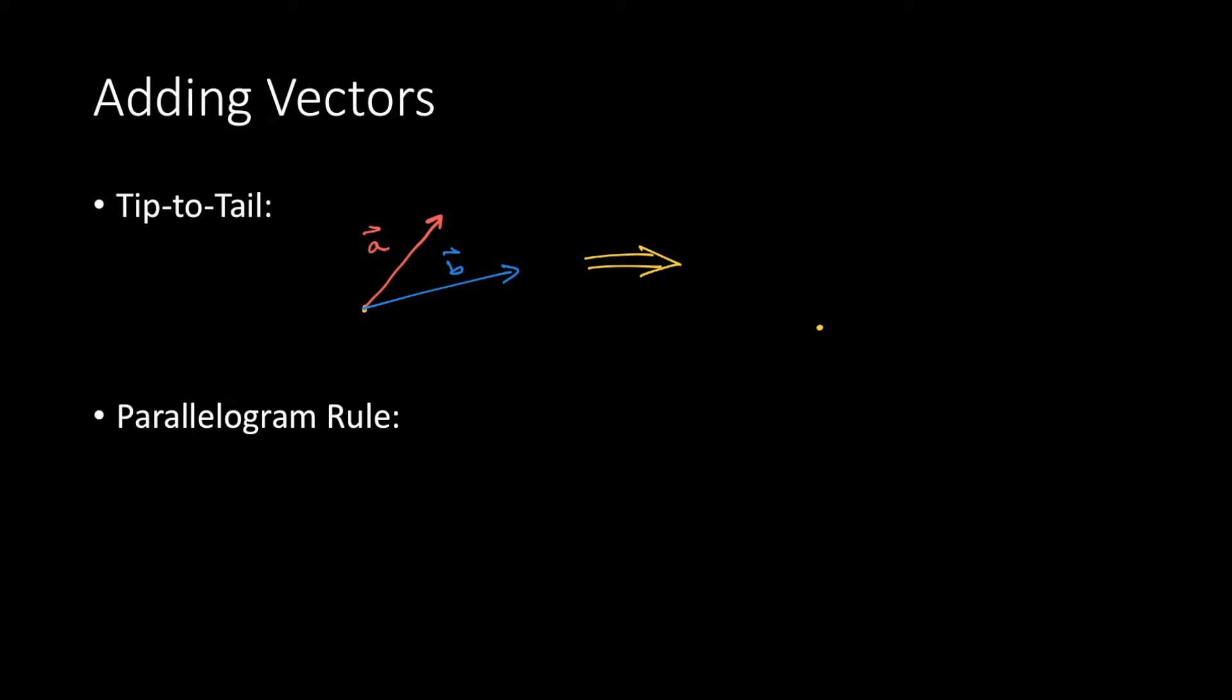Let us look at an example. Let us start by redrawing vector a. We will then place the tail of the next vector, vector b, against the tip of the previous vector, vector a. We could have started with either vector, however.